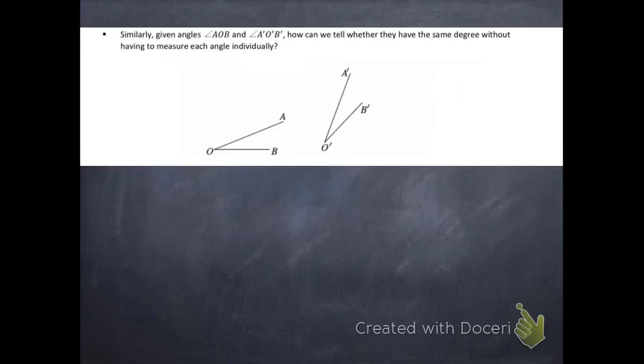Okay, here's another one. Here's two angles, angle AOB and A'O'B', and how can we tell whether they have the same degree without having to measure each angle individually? Okay, this is a similar question to what we saw before.